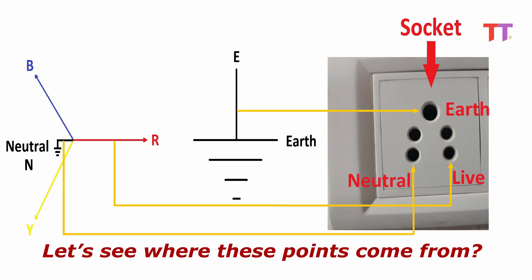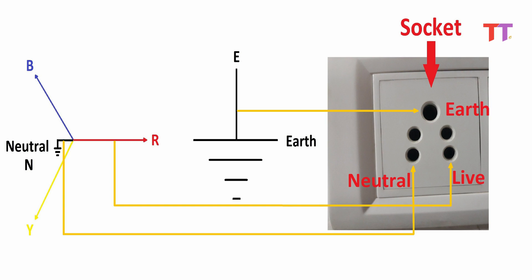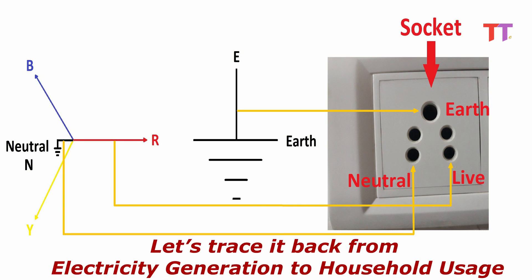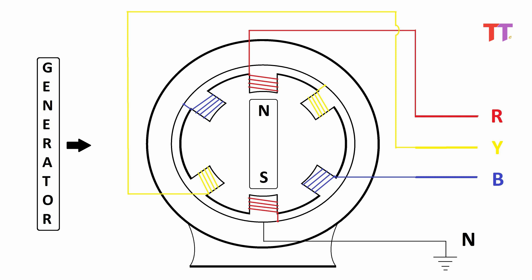Let's see where these points come from — tracing it back from electricity generation to household usage. Inside an electricity generator, star-connected three coils are placed 120 degrees apart, and three-phase electricity is generated.